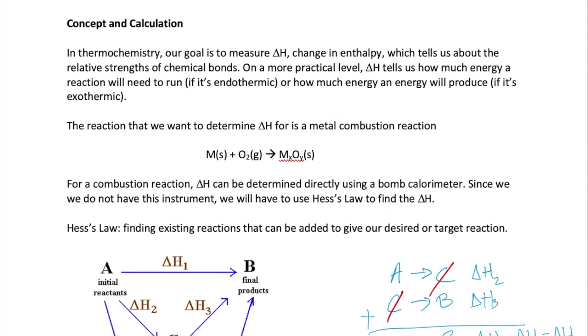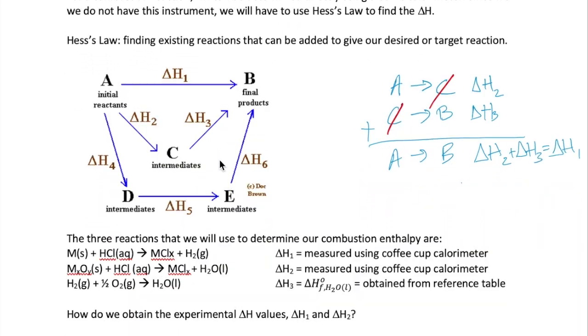As you may recall, in thermochemistry we learned that if we cannot measure the delta H of a reaction directly, we can use the concept of Hess's law to determine delta H. Hess's law refers to the idea that the delta H of a reaction can be measured indirectly by finding other reactions that add up to give the reaction of interest. The example is shown schematically here.